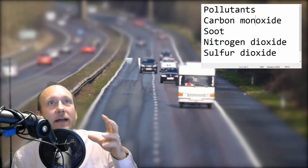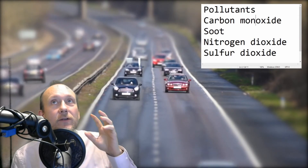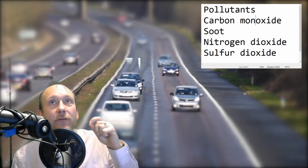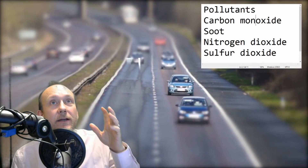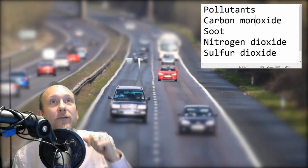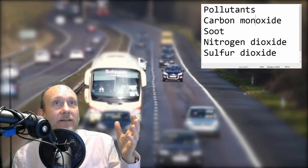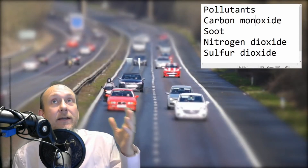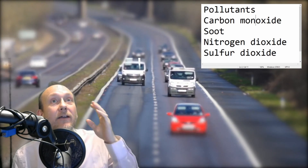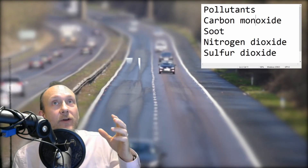Now we come to the second bit — I call it unnecessary censorship — where I blank over the correct answers and you need to get those pollutants in the right order. The first pollutant is a particulate pollutant: it covers surfaces in a black powder and comes from the incomplete combustion of a fuel. The second one basically suffocates you from the inside because it binds to red blood cells, taking the place of oxygen and carbon dioxide in your blood. It is toxic and you should never inhale it.